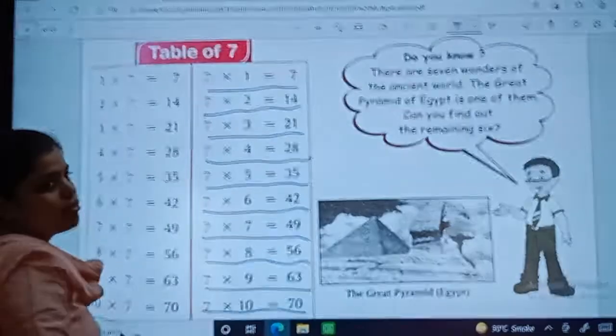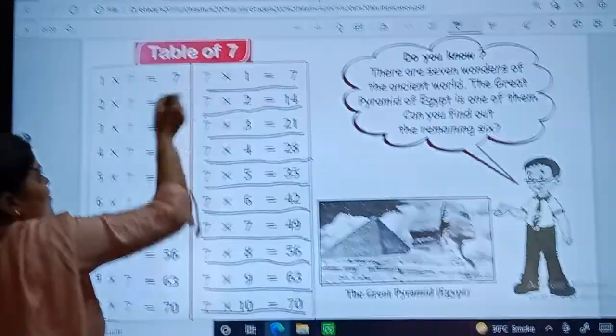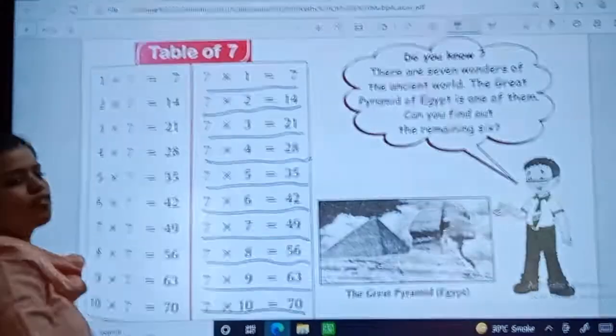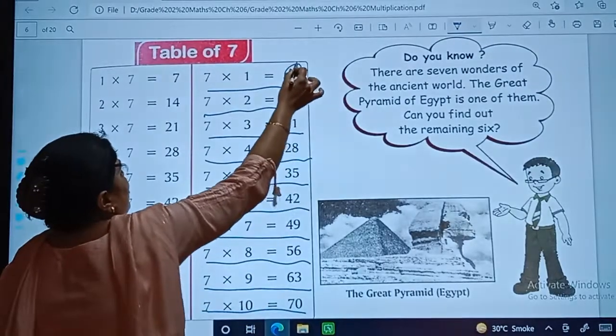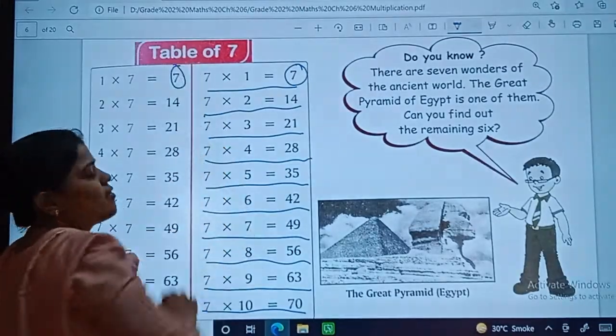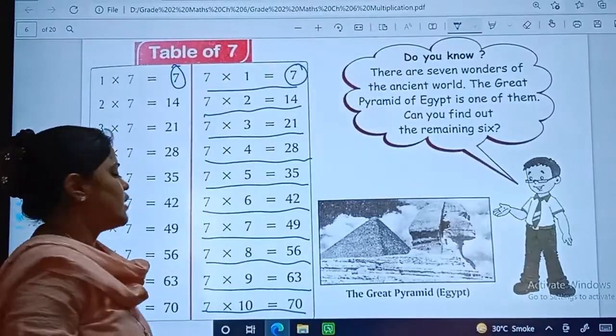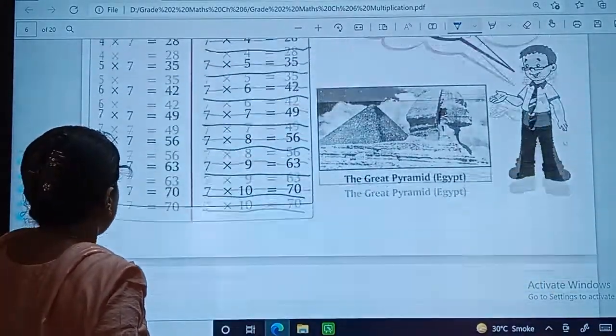Same way students, here also, 1 times 7 is 7. And here also we are changing the order, but our product is same. Ok dear students, now let's start table of 8.